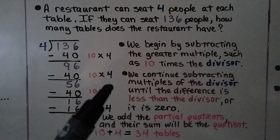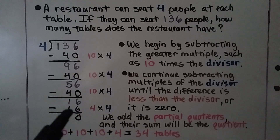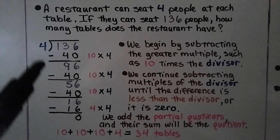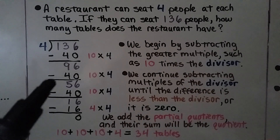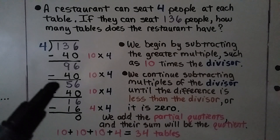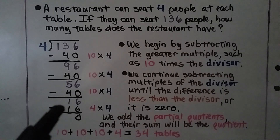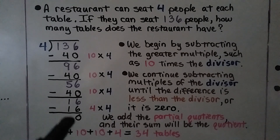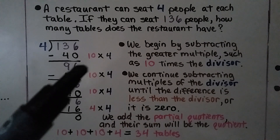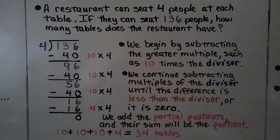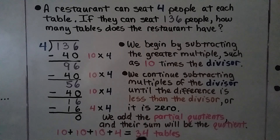We continue subtracting multiples of the divisor until the difference is less than the divisor or it is 0. So we take away another 40 — now the difference is 56. We take away another 40 — now the difference is 16. And 4 times 4 is 16, so we take away a 16 and we have 0. We have 10, 10, 10, and 4 as our partial quotients. We add the partial quotients and their sum will be the quotient.